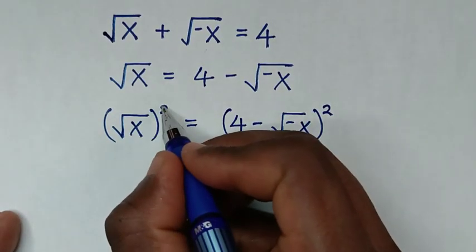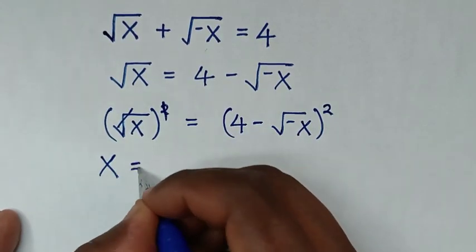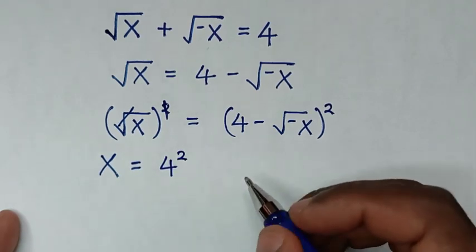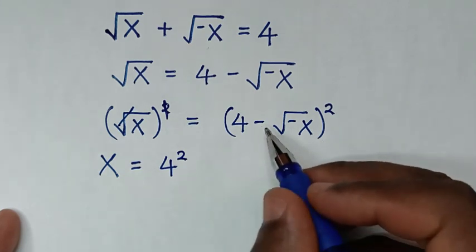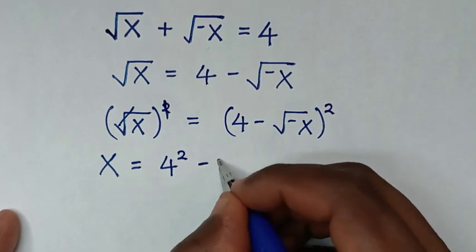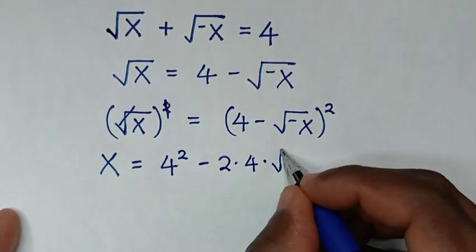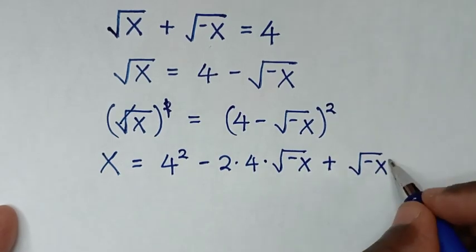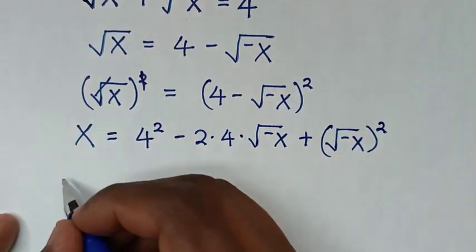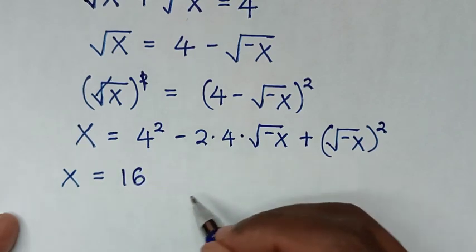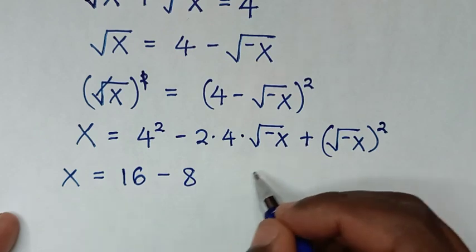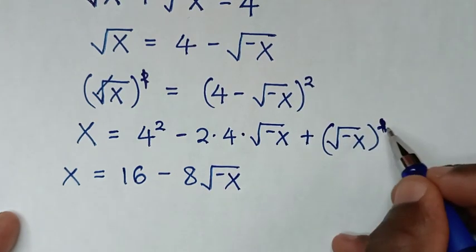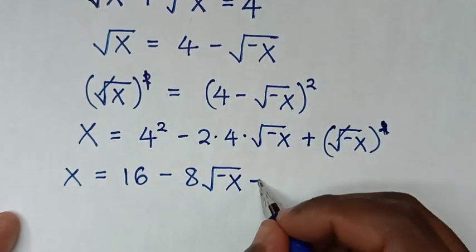The square will cancel the square root, so it will be x is equal to the square of 4 minus square root of negative x. Expanding: 4 times 4 is 16, then negative 2 times 4 times square root of negative x, and the square cancels the square root giving negative x. So x equals 16 minus 8 times square root of negative x, minus x.